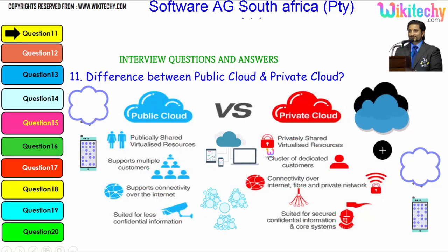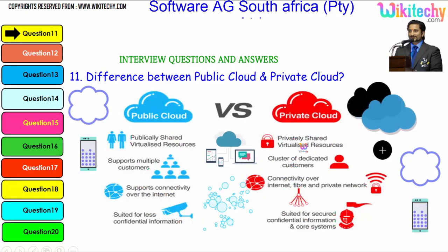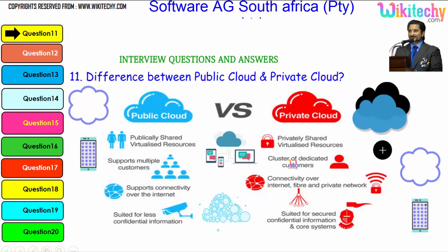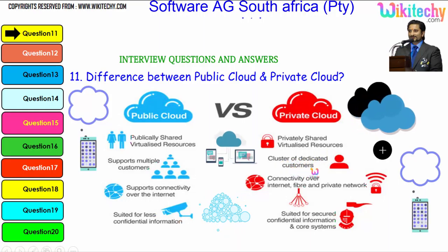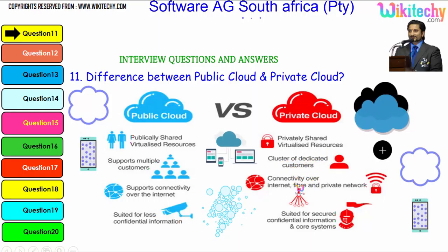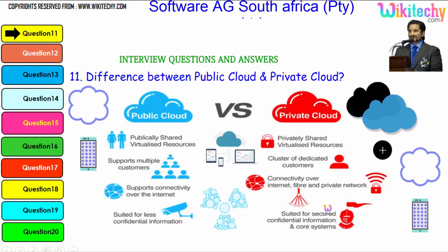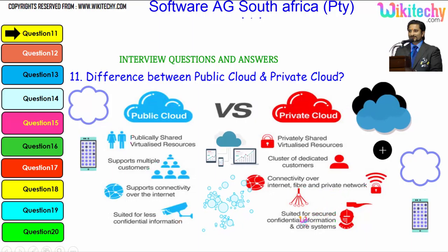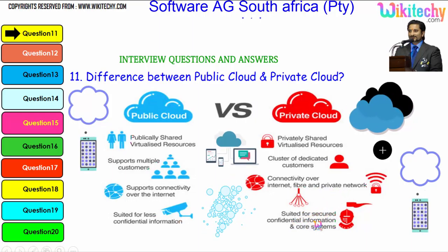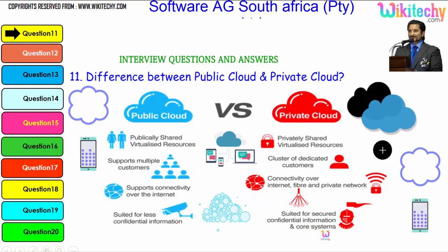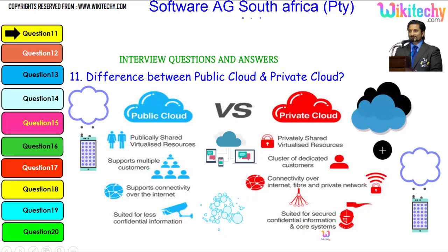For the private cloud, you are able to see privately shared virtualized resources, a cluster of dedicated customers, connectivity to the internet via fiber and private network. It is suited for secure, confidential information and core systems. That is how we are able to show the difference.